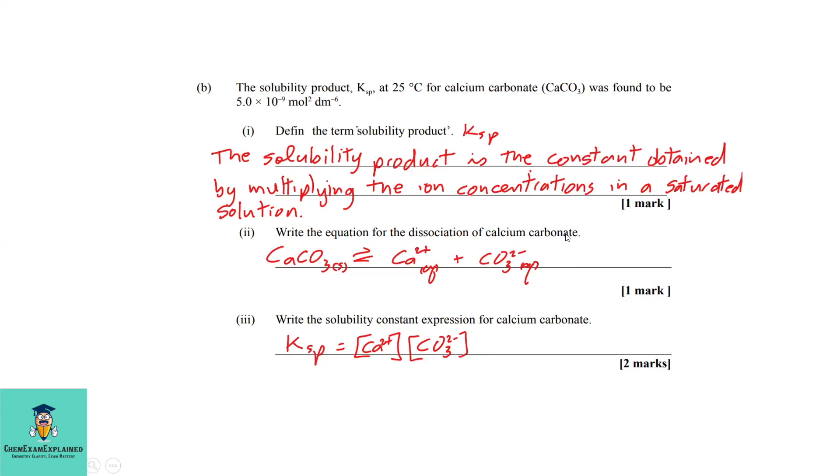Part b2: Write the equation for the dissociation of calcium carbonate. You write: calcium carbonate solid (because it is sparingly soluble) ⇌ calcium ion + carbonate ion.